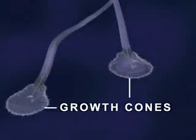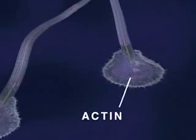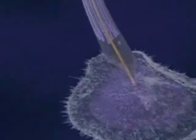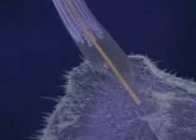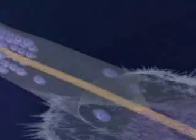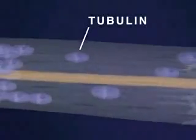Two principal proteins involved in growth cone function are actin, which is responsible for the pulsating motion seen here, and tubulin, a major structural component of the neurite membrane.